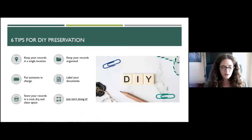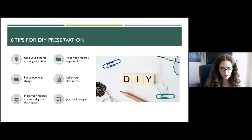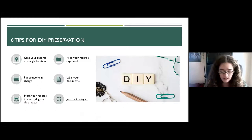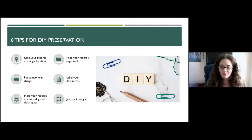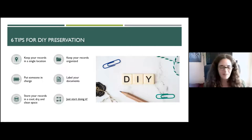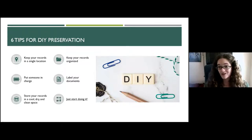Now let's get into the nitty-gritty of how to get started preserving your records. I have six tips for do-it-yourself preservation, keeping in mind that each organization will have different needs. The first is simply to keep all your records in a single location that the entire group is aware of — a box, a folder, a designated notebook, or a digital folder. Scattered records are much easier to lose.